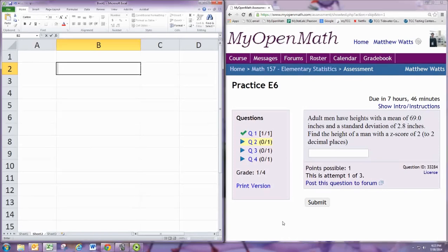We'll go ahead and take the z-score, which is 2, and multiply by the standard deviation. So it's two standard deviations from the mean, right?